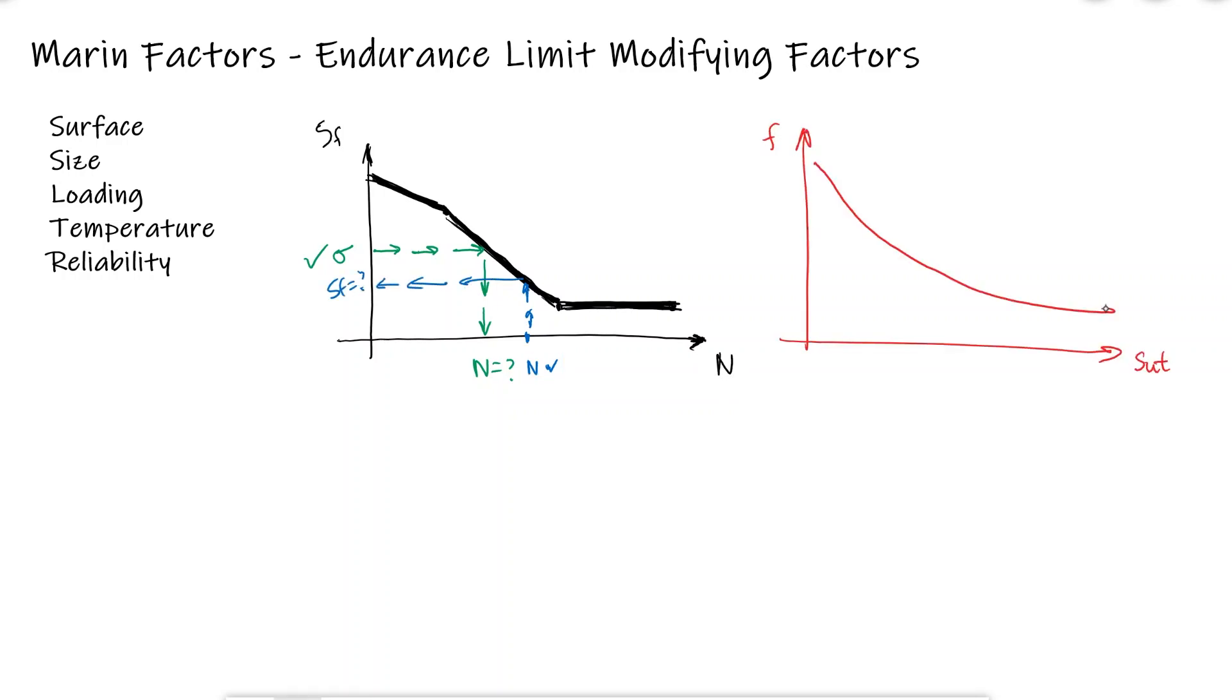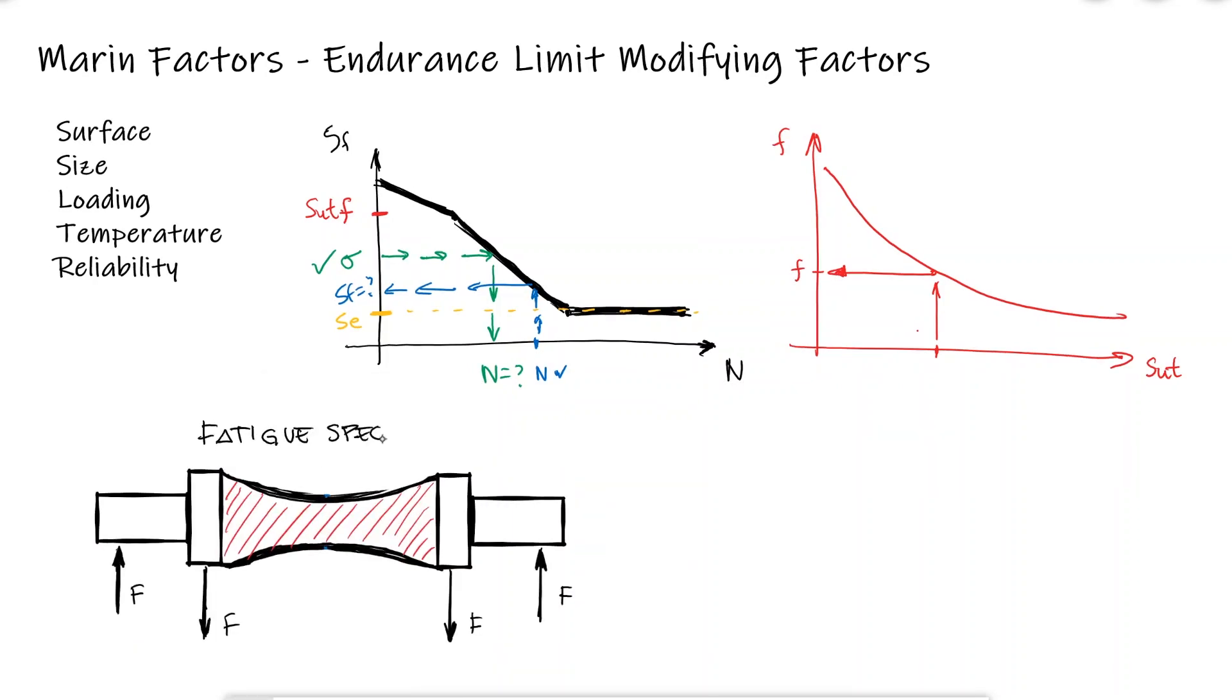We did this by estimating the f coefficient that modifies the ultimate strength for the low cycle region and by estimating a starting value for the endurance limit. The lab specimen we looked at in our previous video, the one that is used to determine the fatigue strength values and the endurance limit, is a very carefully prepared sample with little to no surface imperfections, manufactured in the same way every time and made with precise dimensions.